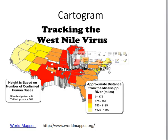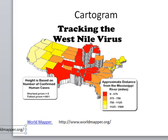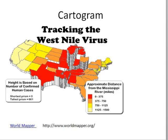This is a special map called a cartogram. A cartogram shows information where the area or size of the feature being mapped visually represents what's being measured. On this map, colors represent how far each state is from the Mississippi River, and the extrusion — how tall each state is — relates to the number of cases of West Nile virus. You can see that West Nile virus is definitely more prevalent in states closer to the Mississippi River, with one area standing out as a notable anomaly.